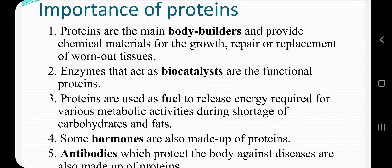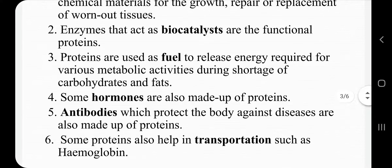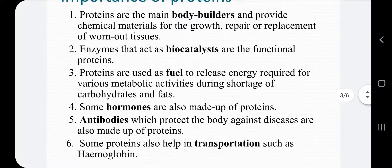Some hormones which are required for the major functions of the body are also made up of proteins. Antibodies which protect the body against diseases are also made up of proteins. Some proteins like hemoglobin help in transportation — hemoglobin combines with oxygen and takes it from the lungs to the tissues. In this way, proteins are very important for our body.